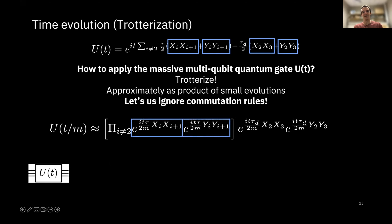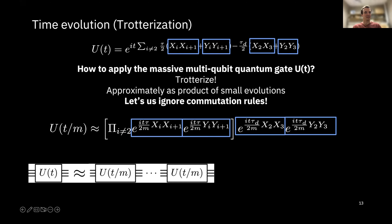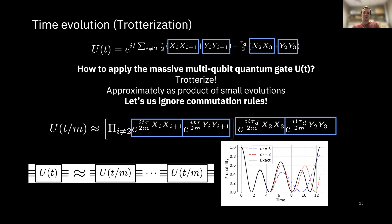In terms of circuits, this means you want this unitary but what you do is approximate it as little steps in time. I've done a simple calculation where we have the exact evolution in black, and plot the Trotter evolution for different numbers of Trotter steps — five and eight. You can see that as we go from five to eight steps, the red line more closely follows the black line. This is the general trend for trotterization.